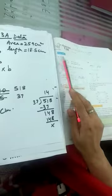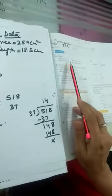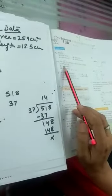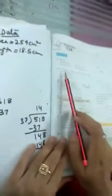Alright, now come to question number 2 on page number 322 in book 1. The area of a rectangle is 259 cm square and its length is 18.5 cm. Find its breadth and perimeter.